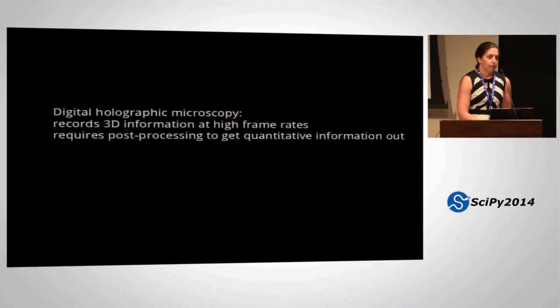So digital holographic microscopy records with simple cameras, research-grade cameras, 2D images, but encodes 3D information. And we need to do post-processing to get all the information back out of it. And there are two main ways to do that.